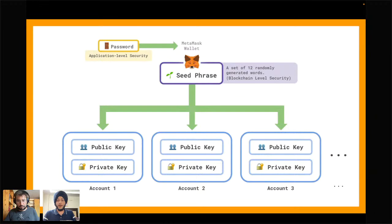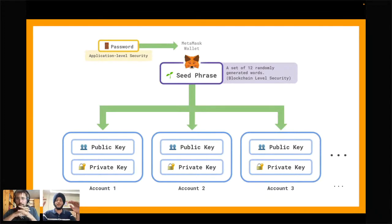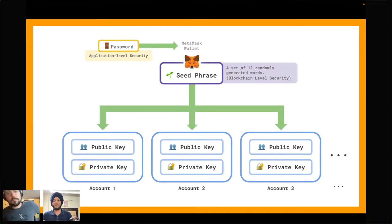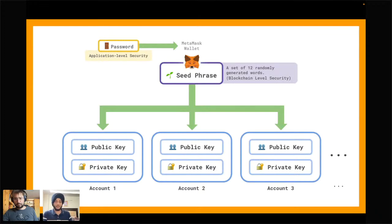The anatomy of a MetaMask wallet: a password is needed to access your MetaMask wallet and acts like a front gate providing application-level security. A seed phrase is a set of 12 randomly generated words providing blockchain-level security. The seed phrase derives two key components — a public key and a private key. Each public-private key pair is called an account. By default you'll see Account 1, and you can add Account 2, Account 3, and so on, and rename them as well.